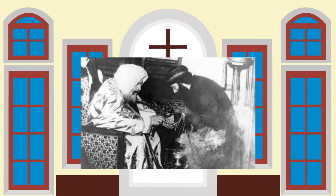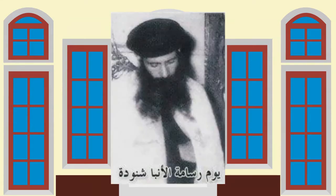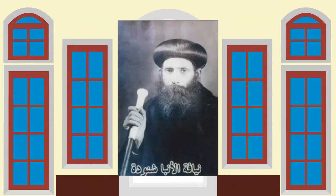He was appointed the personal secretary to Pope Cyril VI. Three years later, Abun Antonius was ordained Bishop Shenouda, the first bishop for Christian education. He became the president and dean of the Theological Seminary.